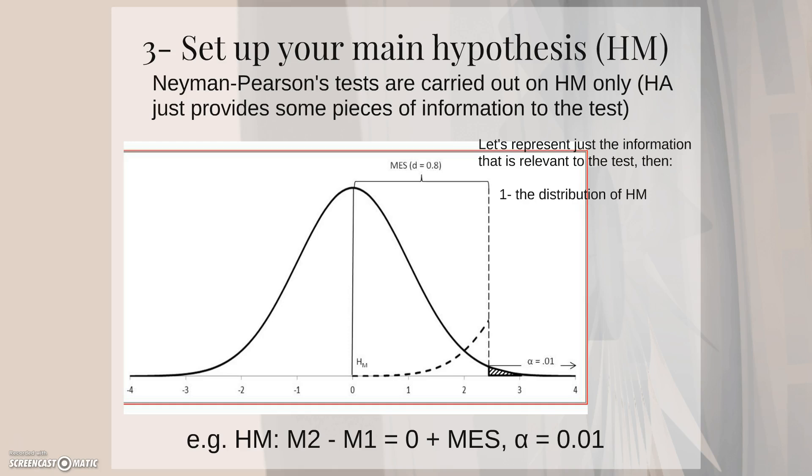So the relevant pieces of information are the distribution of the main hypothesis, the probability of only rejecting the main hypothesis in the long run, or type 1 error, which we decided to be 1%. This is the alpha level, which will double as decision threshold later on.